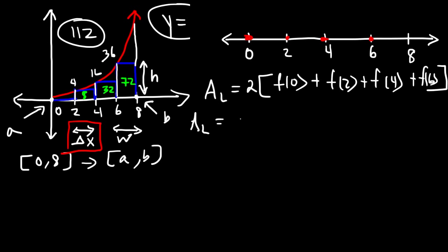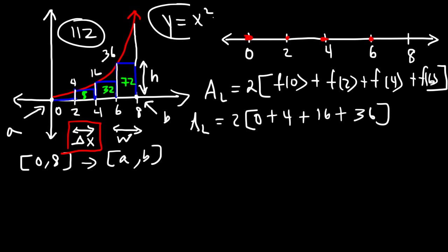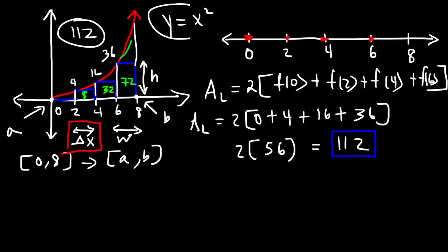Since f(x) = x², we have: f(0) = 0, f(2) = 4, f(4) = 16, f(6) = 36. Then 4 + 16 = 20, 20 + 36 = 56, and 2 × 56 = 112. So the approximation using the left endpoints is 112. Keep in mind this is an under-approximation since there's empty space unused. The real answer will be greater than 112. Now let's approximate the area using the right endpoints.